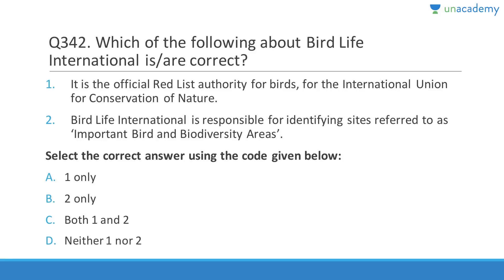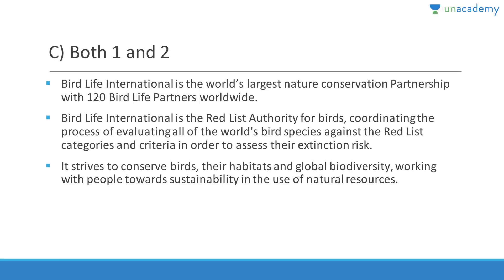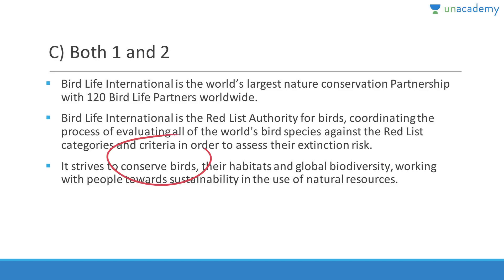Question 342: BirdLife International is the official Red List authority for birds for the IUCN — correct. BirdLife International is responsible for identifying sites referred to as Important Bird and Biodiversity Areas — also correct. Answer is C (both 1 and 2). It is the world's largest nature conservation partnership with 120 BirdLife partners worldwide, evaluating all bird species against Red List categories and criteria.